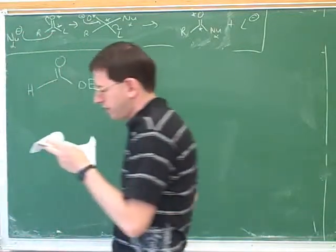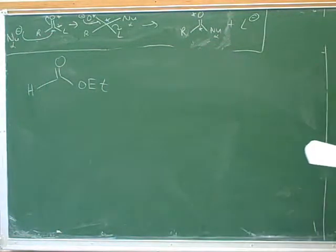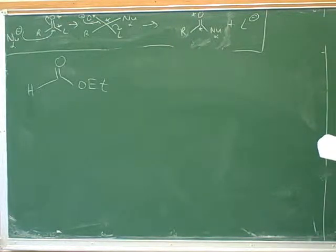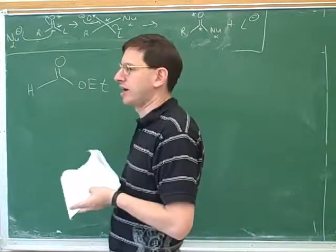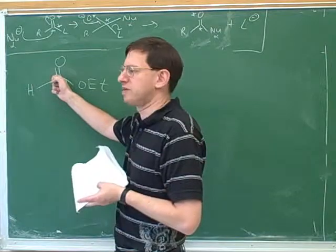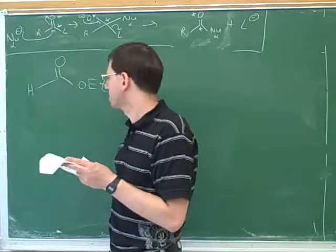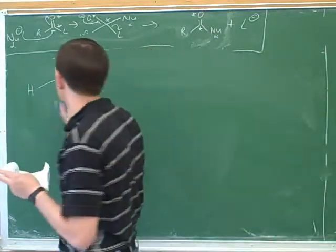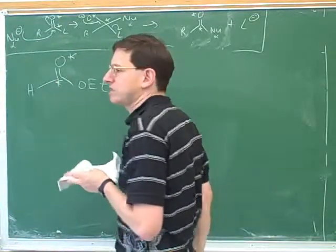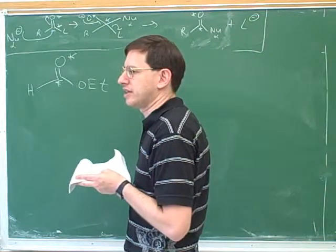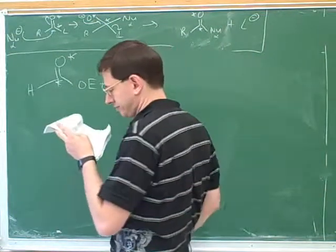For example, what role would this play in a crossed Claisen condensation — would it be the nucleophile or the electrophile? It would be the electrophile. Why? Because it has no alpha hydrogens on the alpha carbon — in fact there is no alpha carbon, since it's not attached to the carbonyl, so it can't form an enolate. This would definitely get the asterisks and play the role of the electrophile. We can use the same trick as with the crossed aldol condensation: one of the molecules should have no alpha hydrogens.